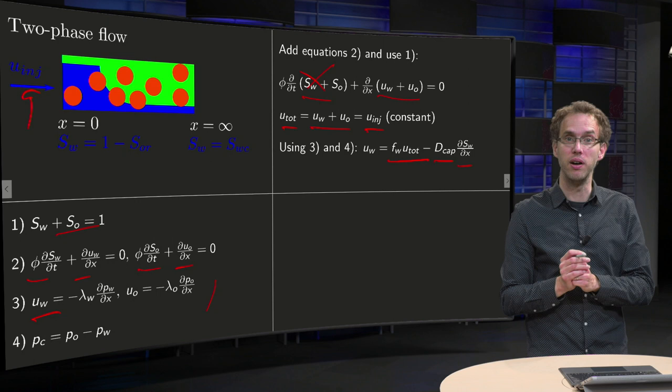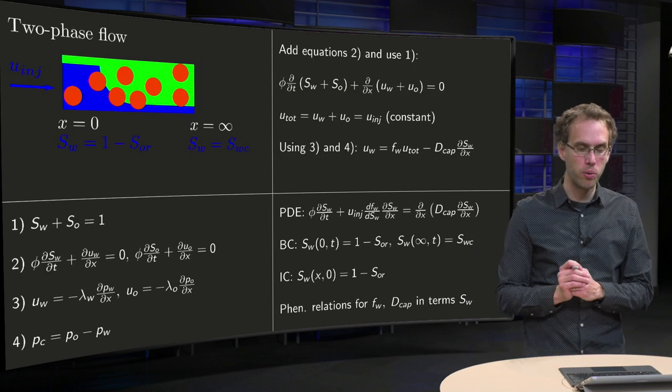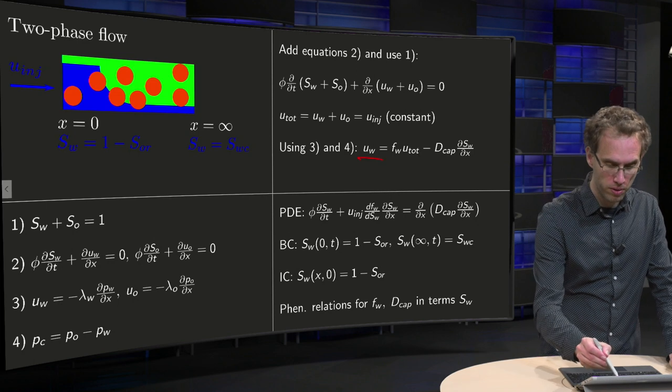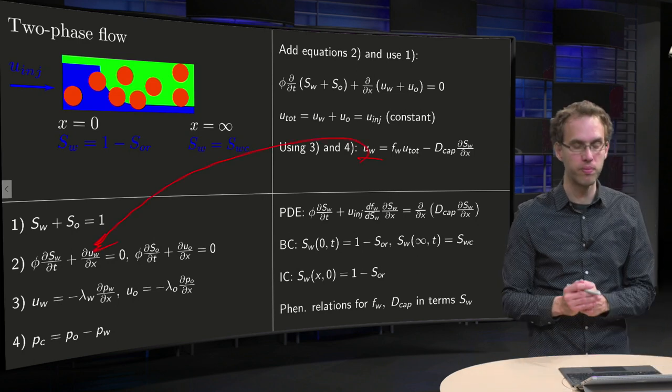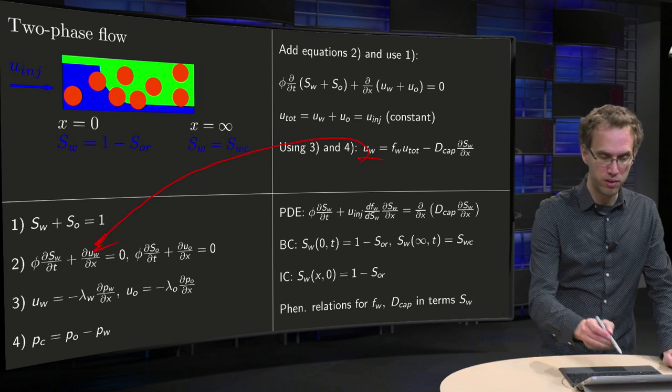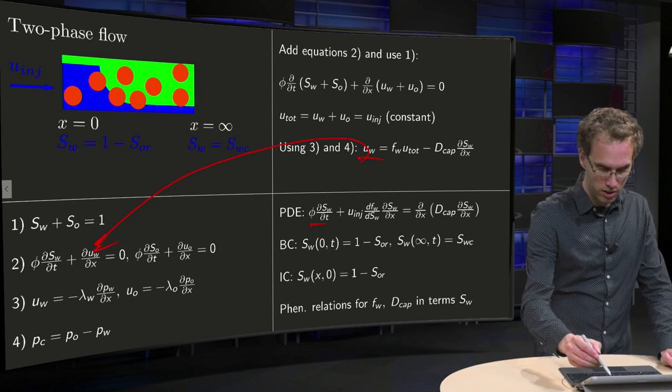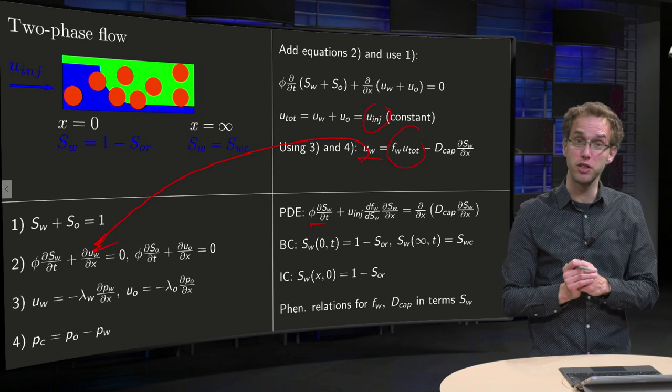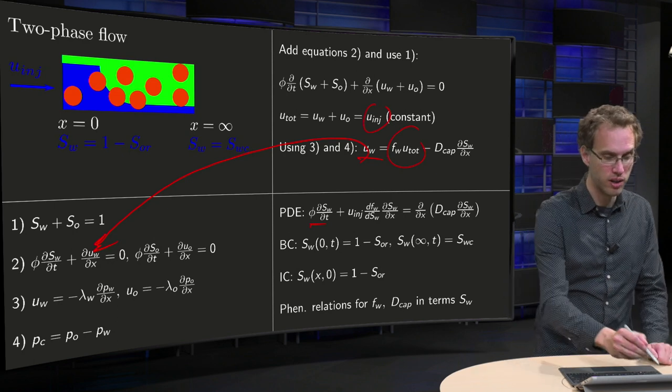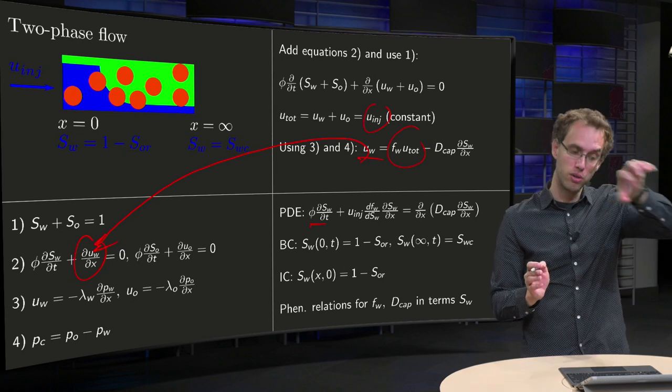We used them in a previous video. Once you have u_w, you can plug it into the mass balance equation. You have φ dS_w/dt. This u_total becomes your injection velocity, which is constant. So the d/dx of F_w times u_total - you can take u_total in front - gives u_injection dF_w/dx.